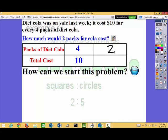Remember with ratios I'm always multiplying or dividing. In this case I'm dividing by 2. So what do I need to do to this 10? I need to do the exact same thing. I need to divide by 2 and I will get 5. Let's check our answer. 2 packs of soda will cost $5.